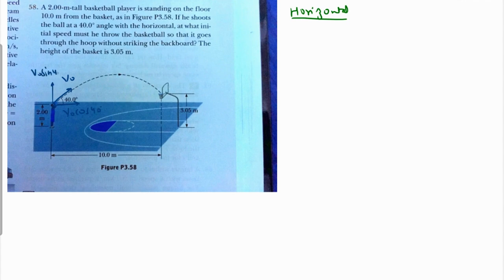In the horizontal side we do not have any acceleration, and the time is simply distance over speed. So the horizontal distance is 10, and the horizontal speed is v naught cos of 40 degrees. Let's call it equation one.